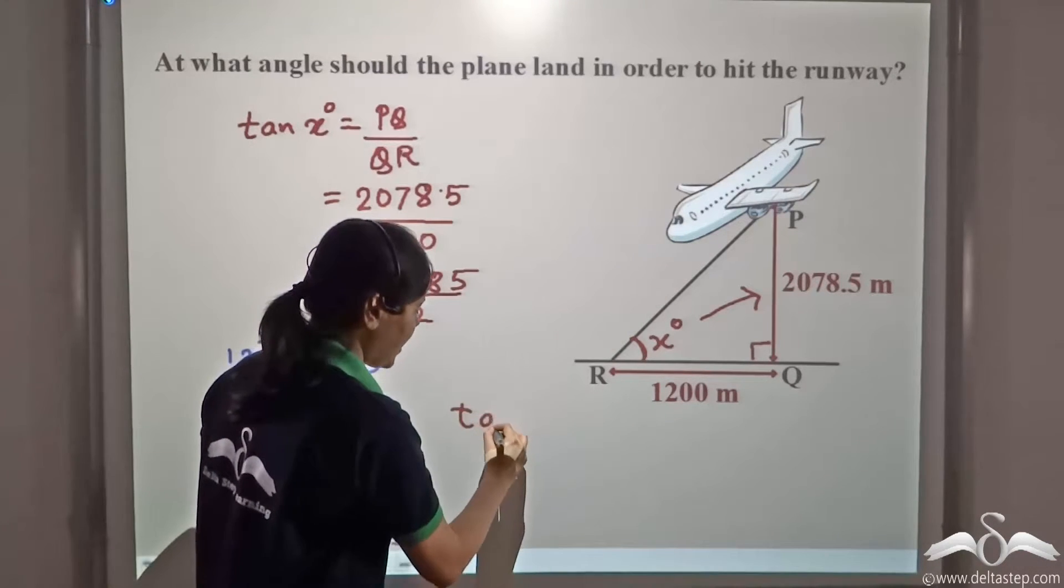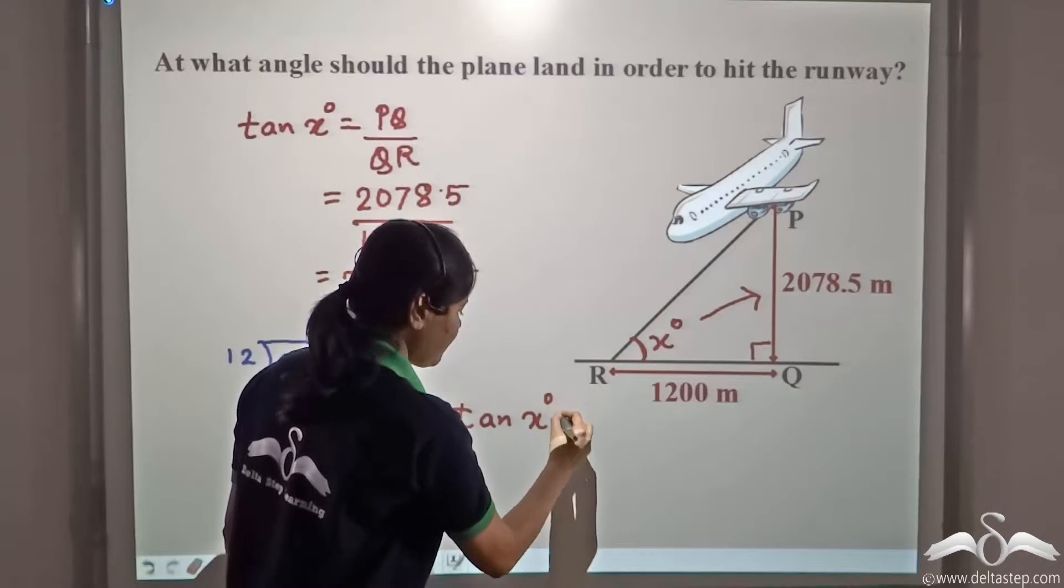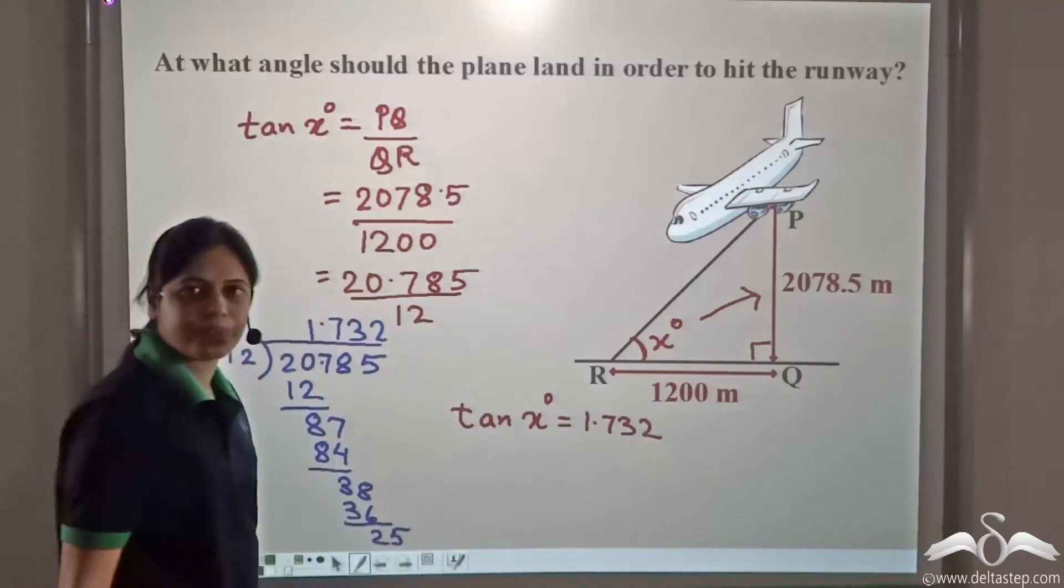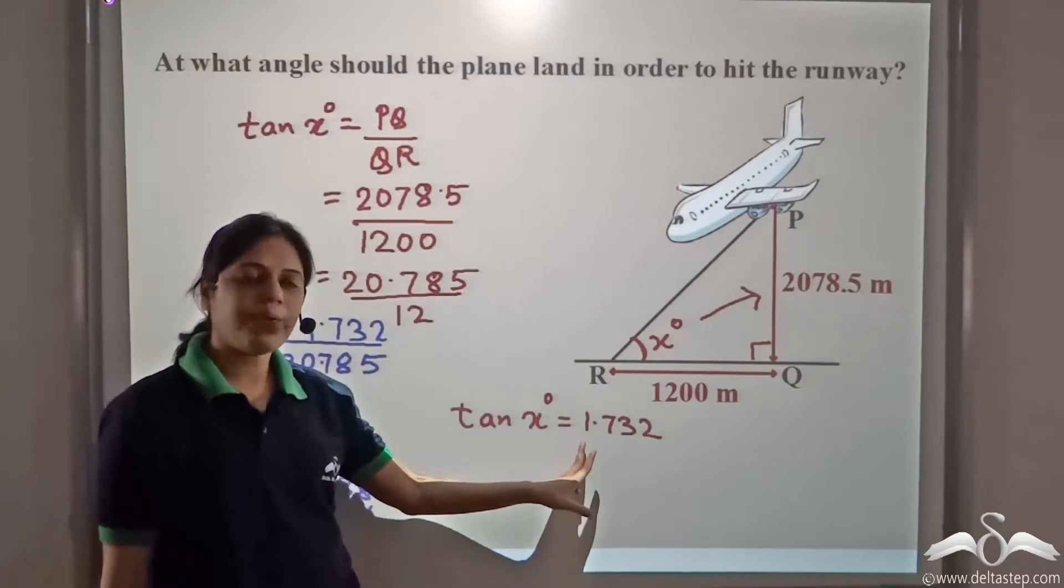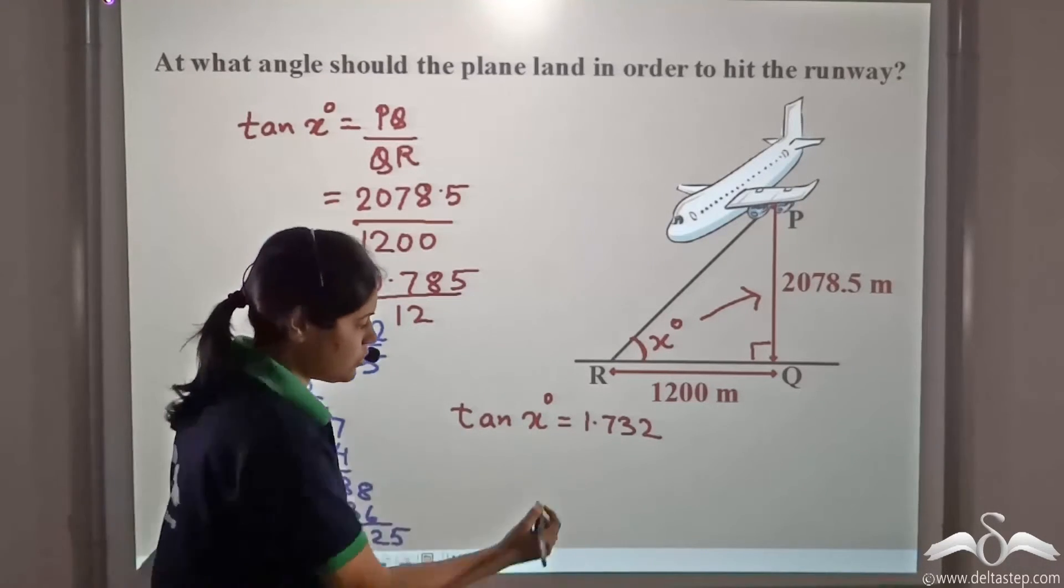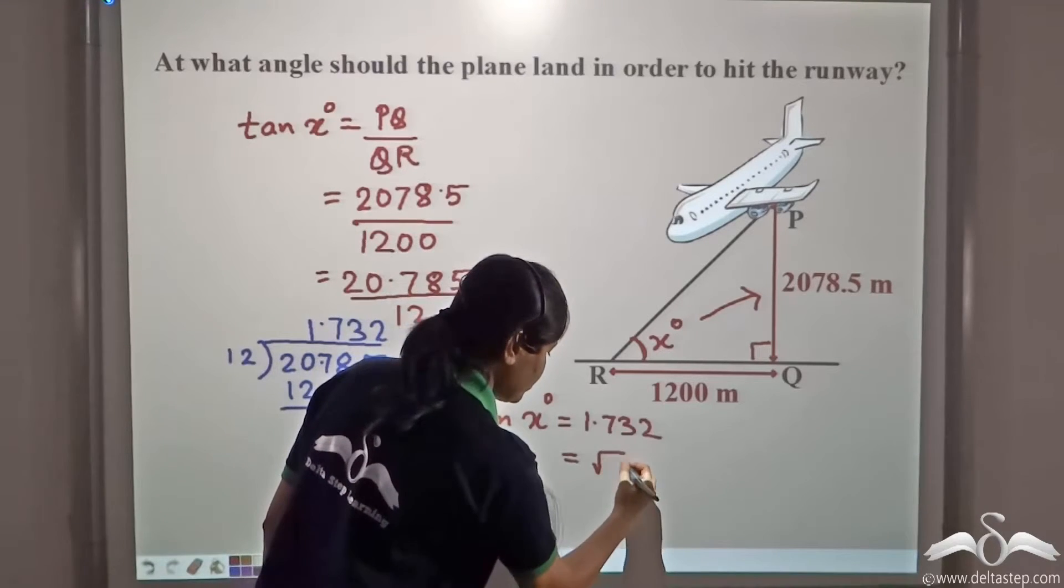From here we have tan x degree is equal to one point seven three two approximately. We know one point seven three two is equal to root three. So, this is equal to root three.